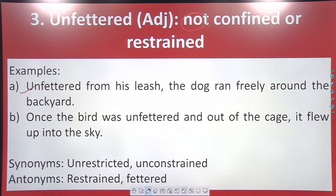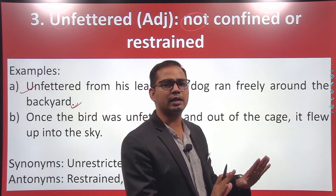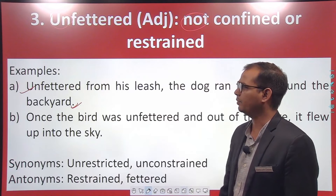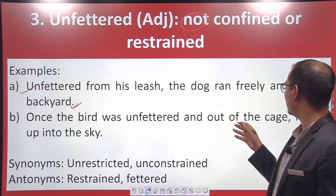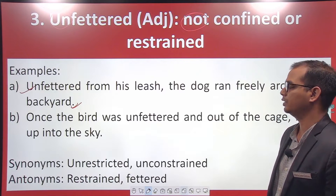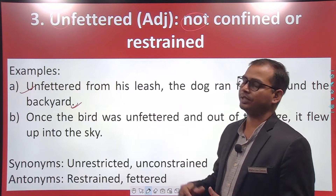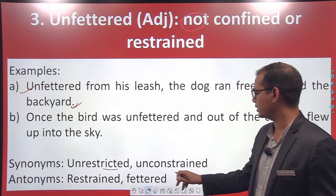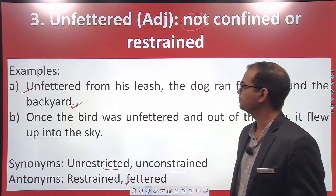Unfettered from his leash, the dog ran freely around the backyard. If you have a pet that is fettered it will stay calm, but as soon as you unfetter it, it will run around freely. Another example: once the bird was unfettered and out of the cage, it flew up into the sky. Birds are very silent in the cage, but once unfettered, they fly away. Synonyms are 'unrestricted' and 'unconstrained'; antonyms are 'restrained' and 'fettered.'